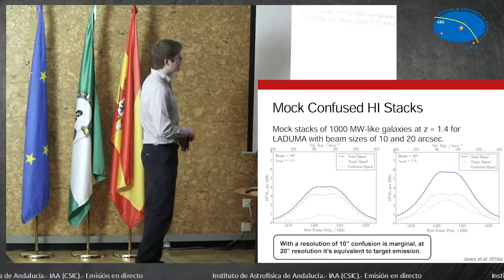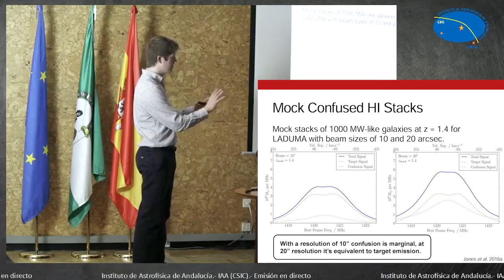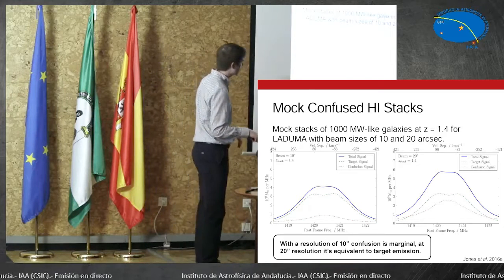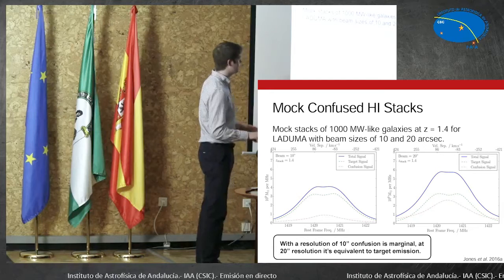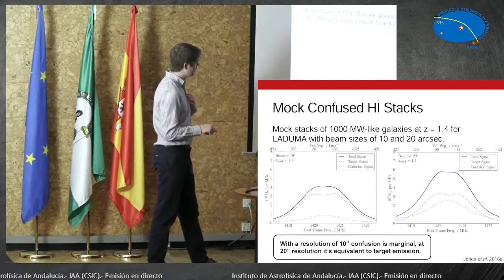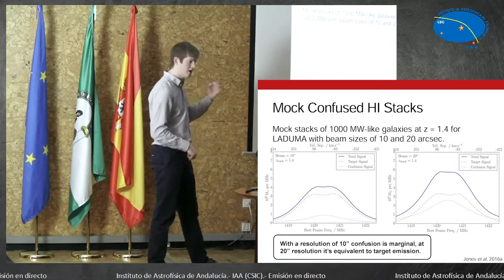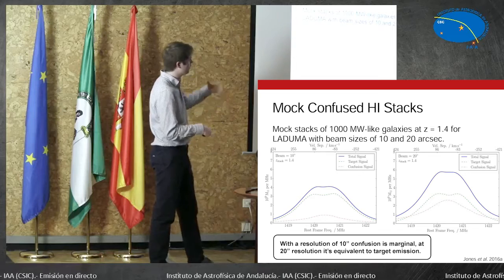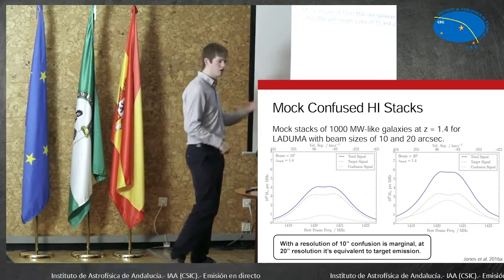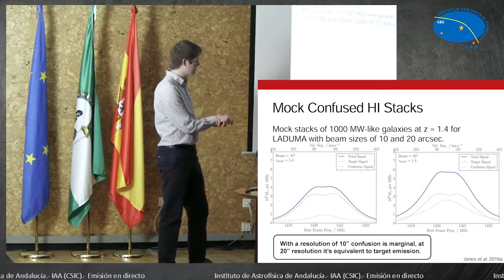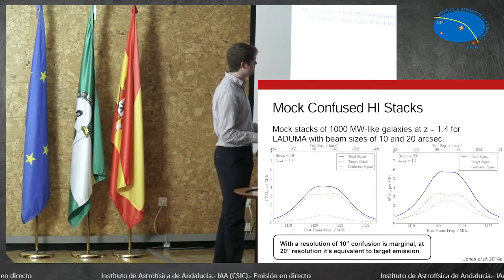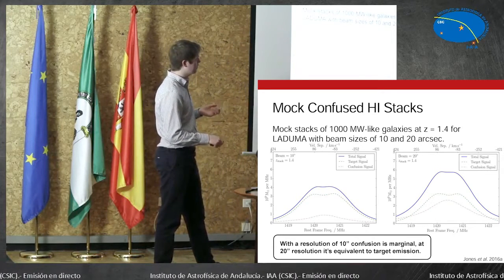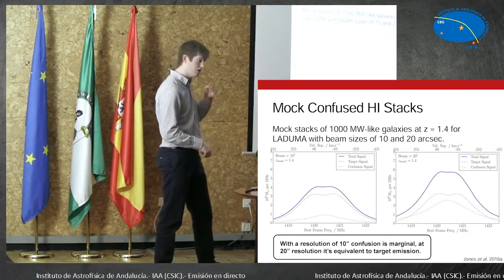Just as an example, here are two mock stacks with no noise — the only things in them are the central galaxies and the galaxies they're confused with. Here is the stack you would get if LADUMA has a resolution of 10 arc seconds: the green line is the flux from your target galaxies, and the red line is the confusion. The confusion contributes maybe 10 to 20% of the total flux — it's not so bad, it's something you can imagine correcting for. But if you have a resolution of 20 arc seconds, then the confusion is contributing about as much flux as the target galaxies themselves, and separating these two is going to be very difficult.